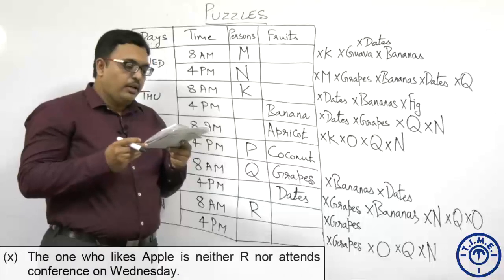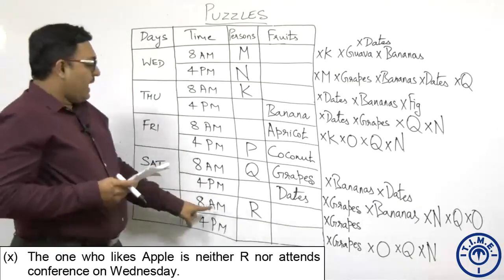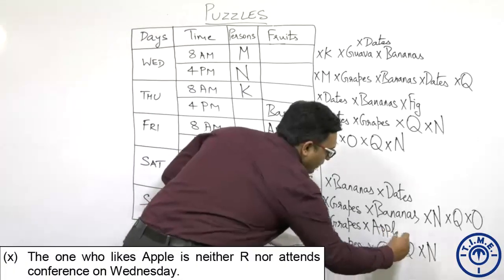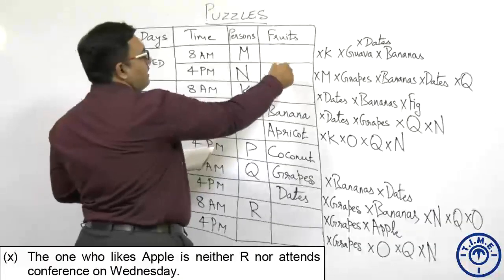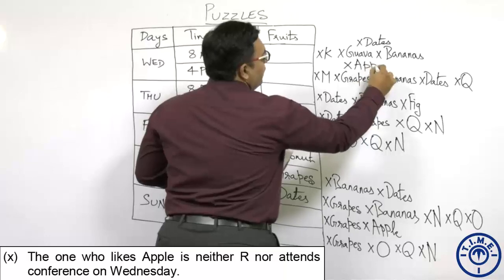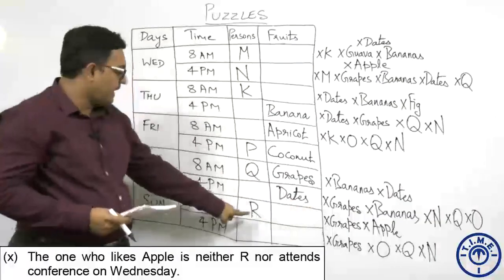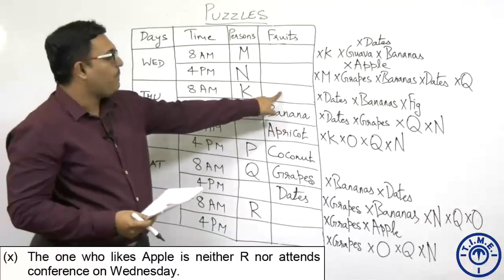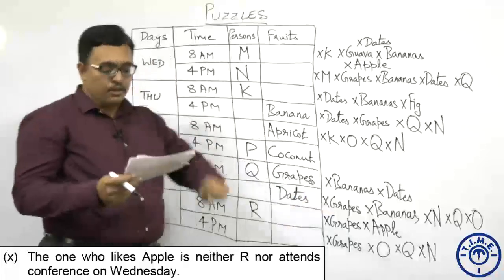The one who likes apple is neither R nor attends the conference on Wednesday. So apple is ruled out for Wednesday 8AM and Wednesday 4PM, and ruled out for R. That leaves apple coming either for K at Thursday 8AM or for L at the last position.